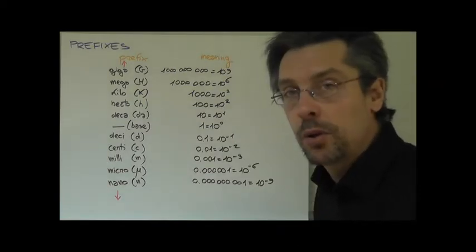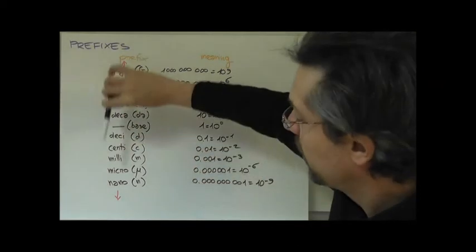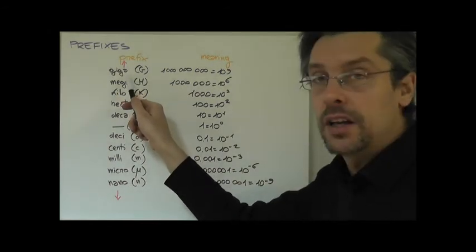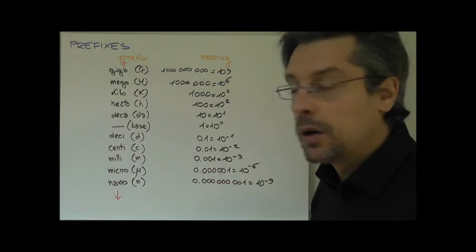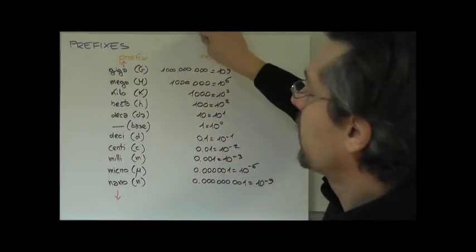Now actually, this table continues in both directions. For instance, 1000 billion is a tera. And the same goes downwards. But this is not only just for us.